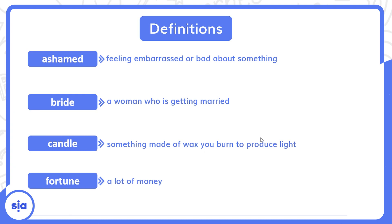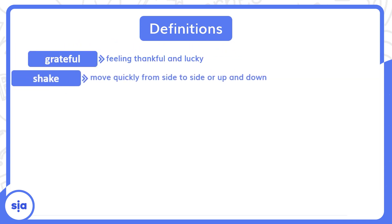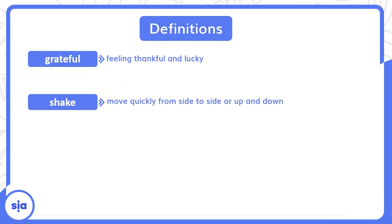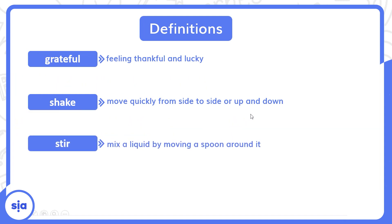Fortune means a lot of money — ثروة. The next word is grateful. What's the meaning of grateful? Feeling thankful and lucky — ممتن، شاكر لحد إنه عمل لك حاجة. Shake means to move quickly from side to side or up and down — يهتز. The next one is stir — mix a liquid by moving a spoon around it — يقلب سائل.